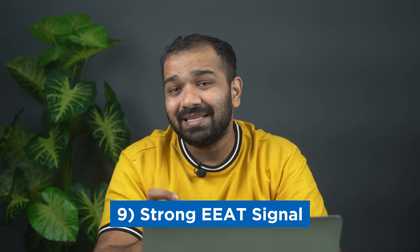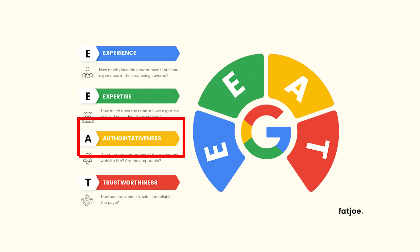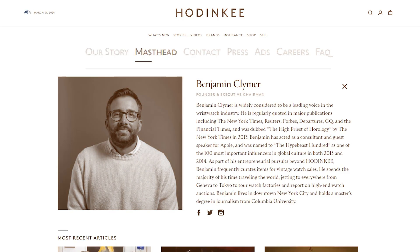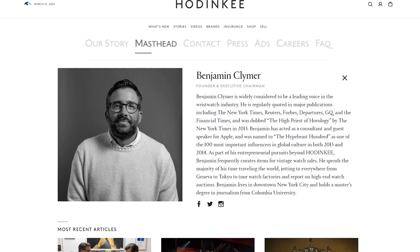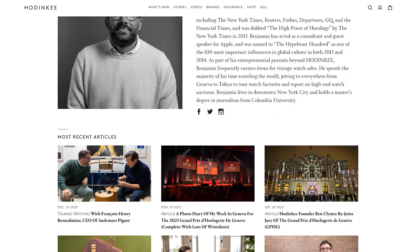Having a strong EEAT signal is essential. EEAT is a term that's been thrown around quite often — it stands for expertise, experience, authoritativeness, and trustworthiness. You should highlight the experience and credentials of your authors and content creators to show their expertise in the domain. You should include the qualifications and experience of the author in the bio. This helps establish authority on a particular topic. Websites that showcase strong EEAT signals are more likely to feature on Discover.